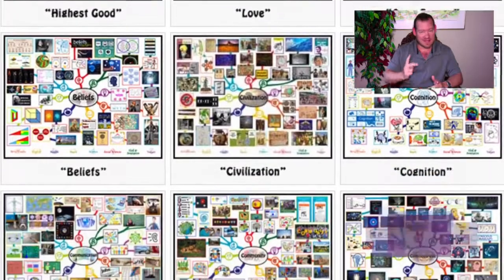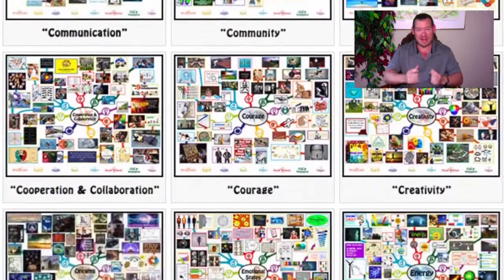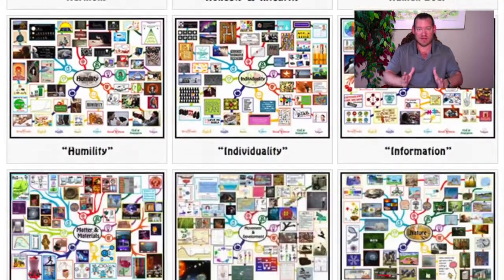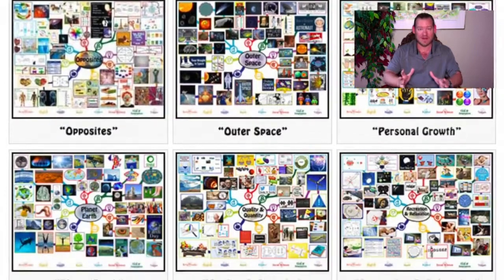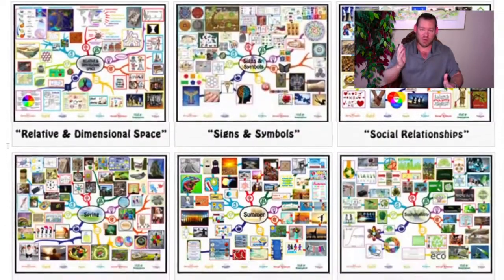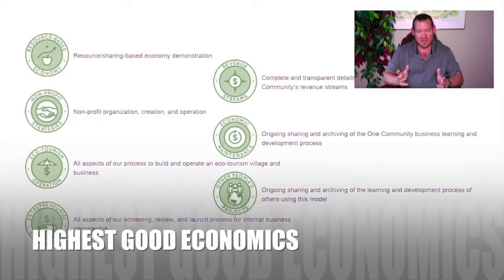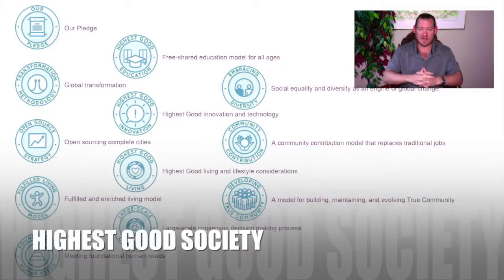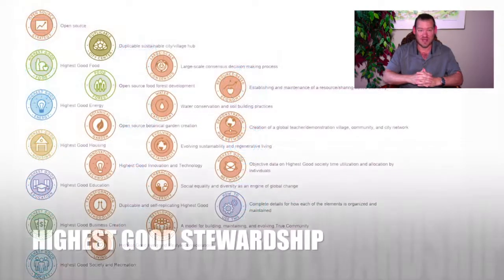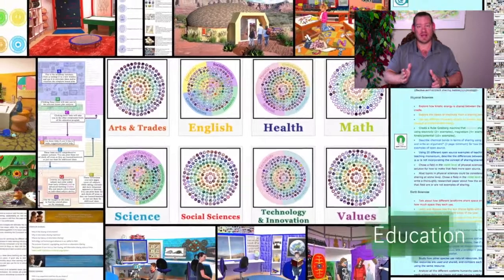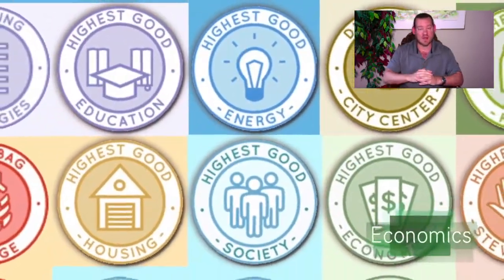We're creating this first and foremost because we want to live this way, secondly because we want other people to be able to live this way, and third because we know it will transform the world in a positive and permanent way. We have the ability, technology, and know-how right now to simultaneously address all of the greatest challenges of this generation and generations to come. Our team has been working on this for over seven years volunteering, with over 300 volunteers helping to create a global transformation process that is self-replicating, open source, free shared, and built as a co-systemic change model for true, comprehensive, holistic global change.